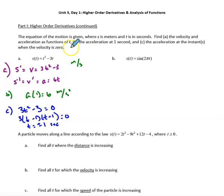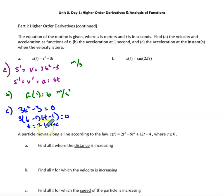The t values where velocity equals zero are plus and minus 1 second. The domain hasn't been restricted, but we can assume we're not dealing in negative time, so we use time equals 1 second. The AP exam will typically restrict this for you. The acceleration when velocity equals zero — which occurs at t equals 1 — is 6 meters per second squared, which we already found.